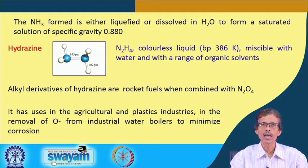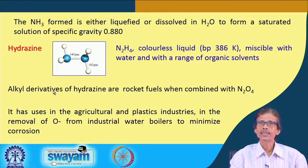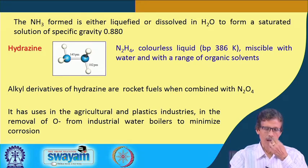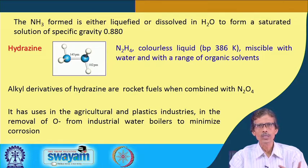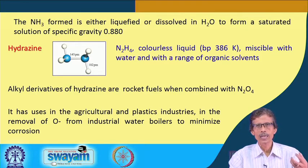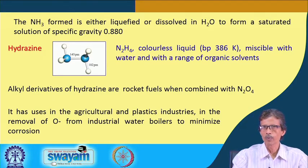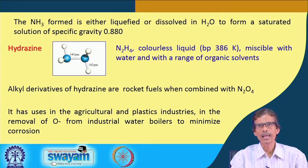Most importantly, if we can have some alkyl derivative — once we attach three hydrogen atoms to the nitrogen center we get NH₃, which is ammonia. But if one of those hydrogens is replaced by an alkyl group — typically an organic molecule like methyl, ethyl, propyl, butyl — then instead of a nitrogen-hydrogen bond we have a nitrogen-carbon bond, giving us the corresponding alkyl derivative of ammonia: the alkylamine.